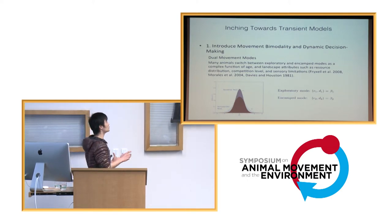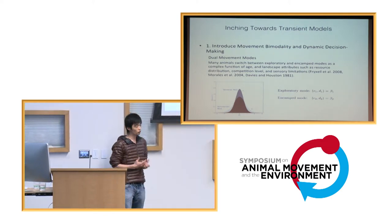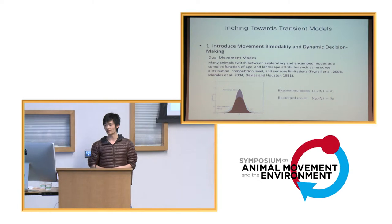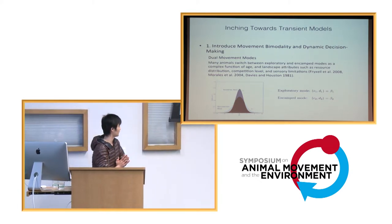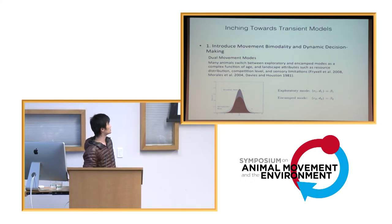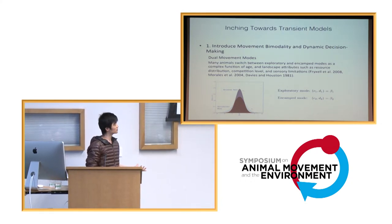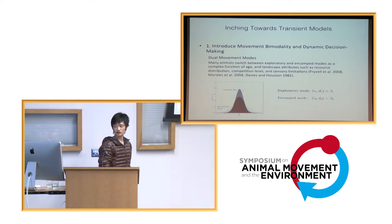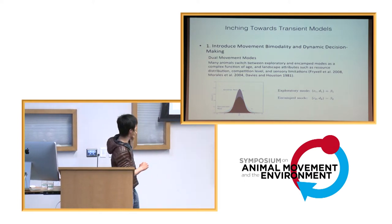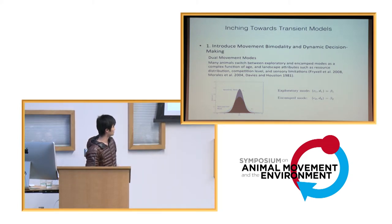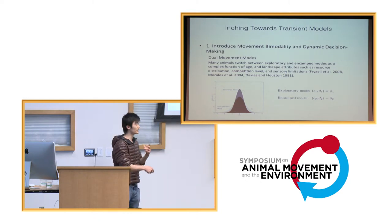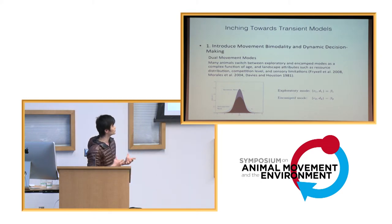So how can we finally make this push towards transient analysis on the theoretical end? One model that me and my collaborator have come up with is to essentially borrow methods from optimal foraging theory and introduce two major ideas. One is this movement by modality that has been recently emphasized in many papers, but also a decision-making process concerning the particular movement mode an animal will pick up.